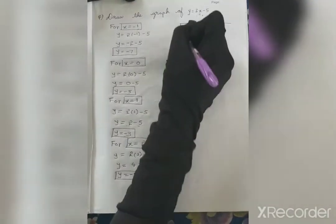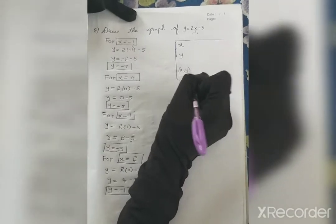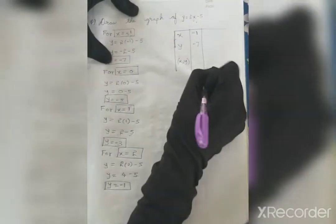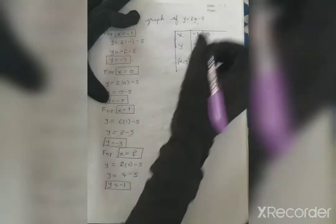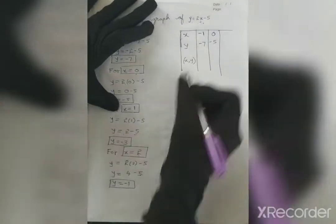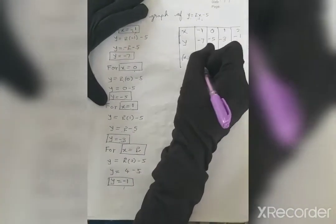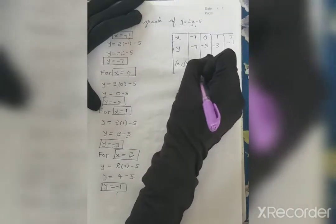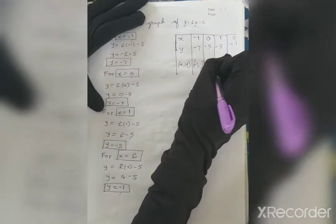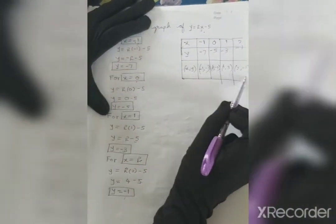Now put all those points in a table. The first row will be x, the second row will be y, and the third row will be the (x, y) coordinates. When x is minus 1, y is minus 7. When x is 0, y is minus 5. When x is 1, y is minus 3. When x is 2, y is minus 1. Now I have 4 points, so I can plot the graph.